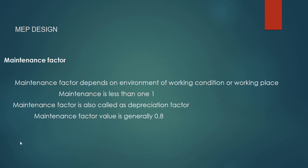Now we have finished the coefficient of utilization factor. Going to the maintenance factor: maintenance factor depends on the environment of the working condition or working place. Maintenance factor is less than one. It is also called the depreciation factor. The maintenance factor value is generally 0.8.